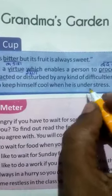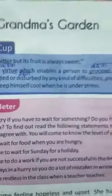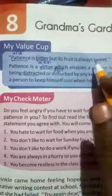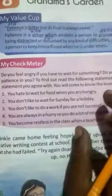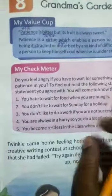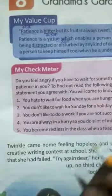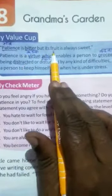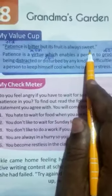A person has a lot of pressure to achieve his goal. Before explaining the chapter, I will read the check meter and explain it, then proceed with the difficult words and their meaning, and then continue with the explanation of this chapter. I will read the moral value again: patience is bitter, but its fruits are always sweet.